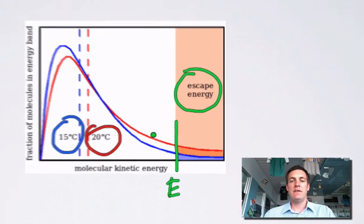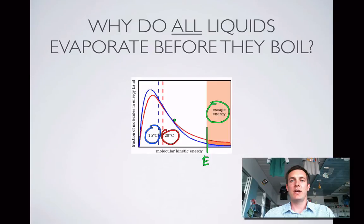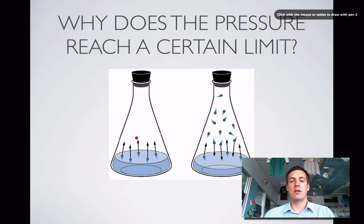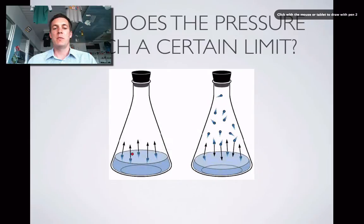So even if the liquid isn't hot enough to boil, there are particles which can evaporate. Now that's really important, because if I put a liquid in a sealed container, some of it will immediately start to evaporate. At the beginning there aren't any gas particles above it, but they're evaporating, and eventually there'll be lots of gas particles up there that have evaporated, and some of those will reach the surface of the liquid and condense.